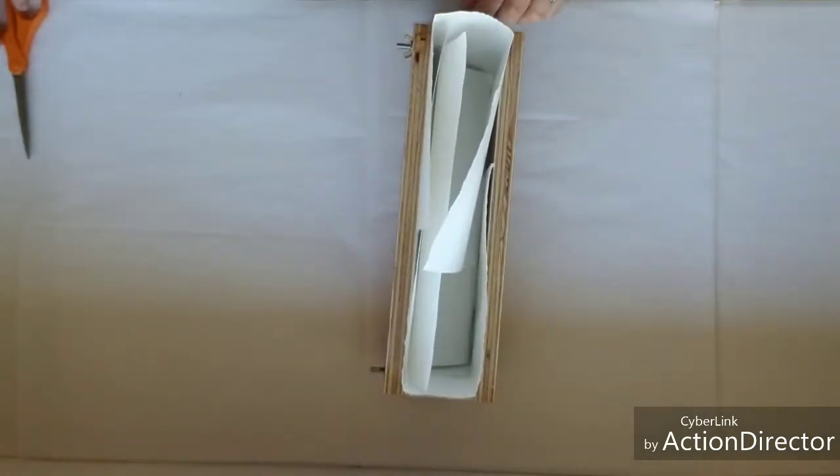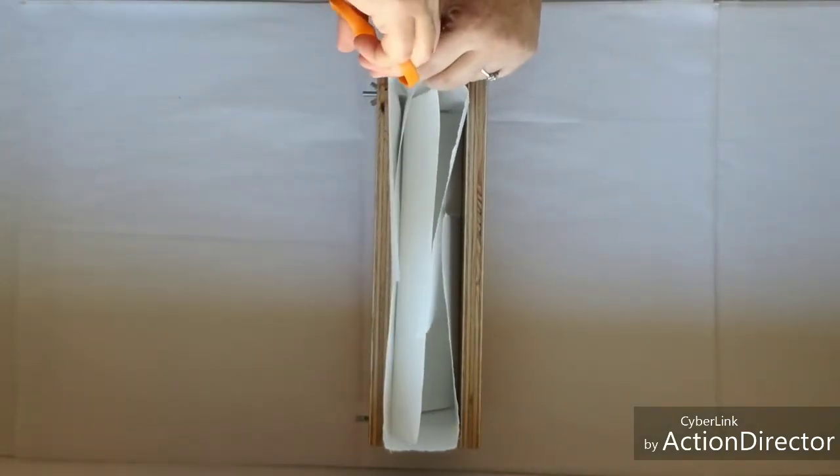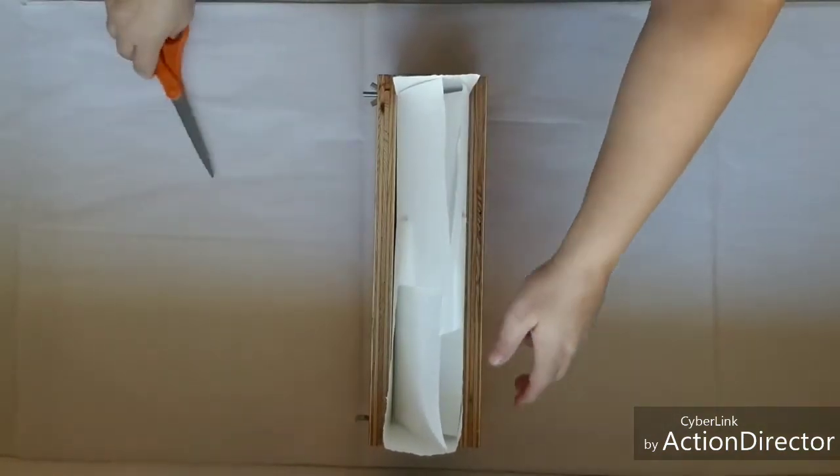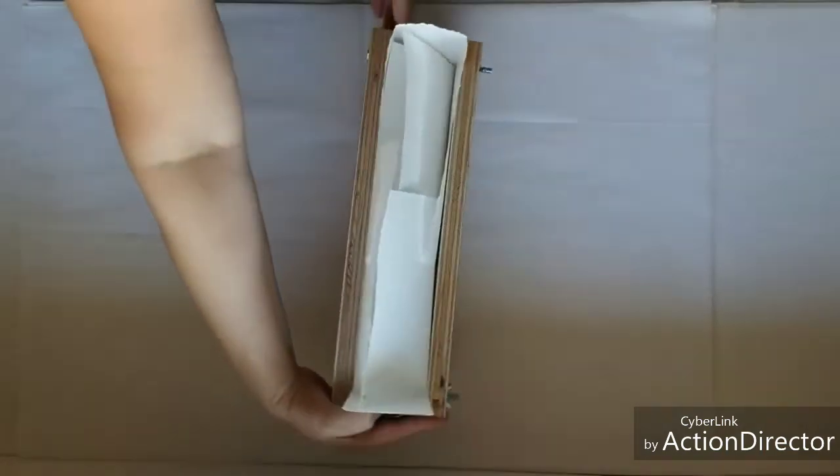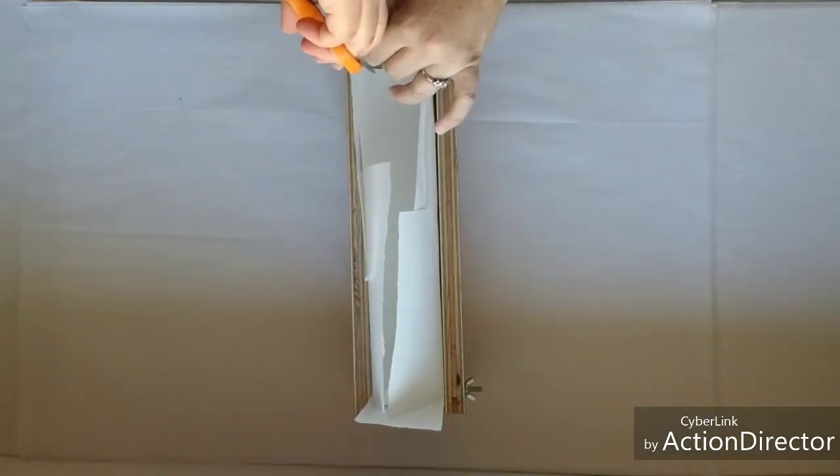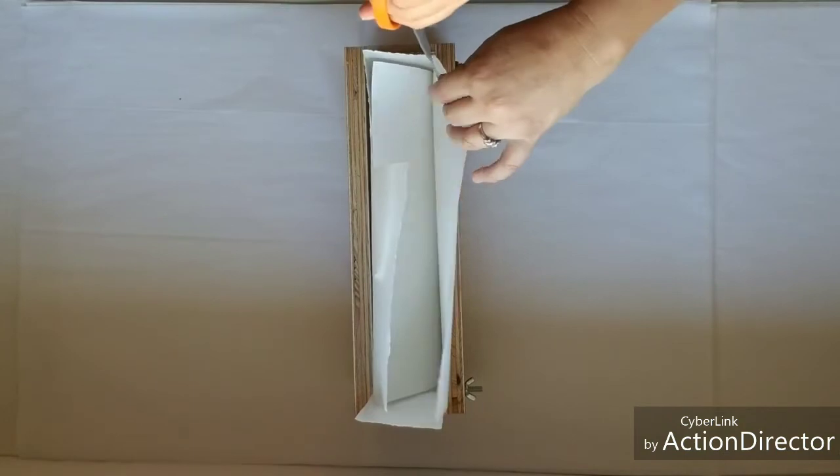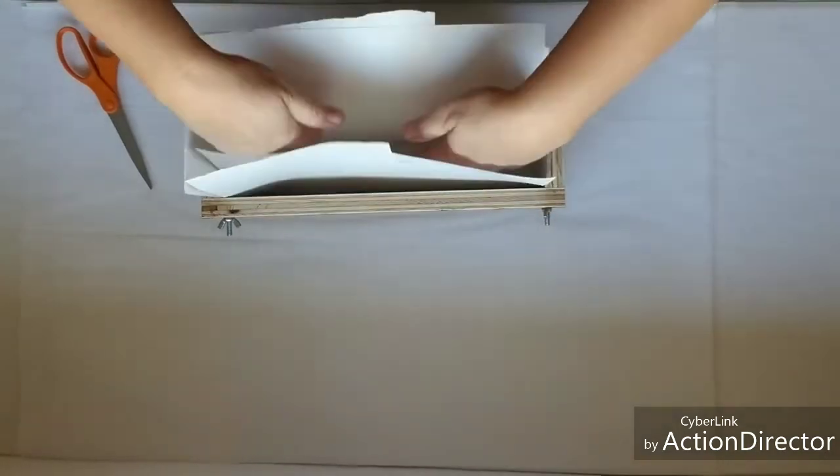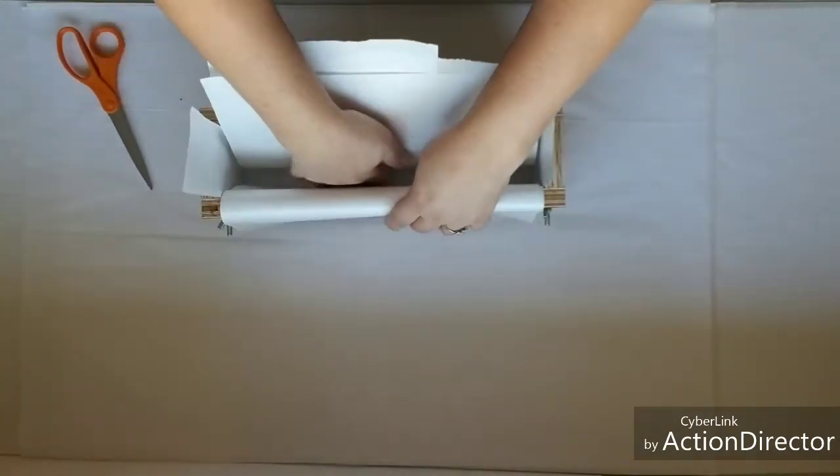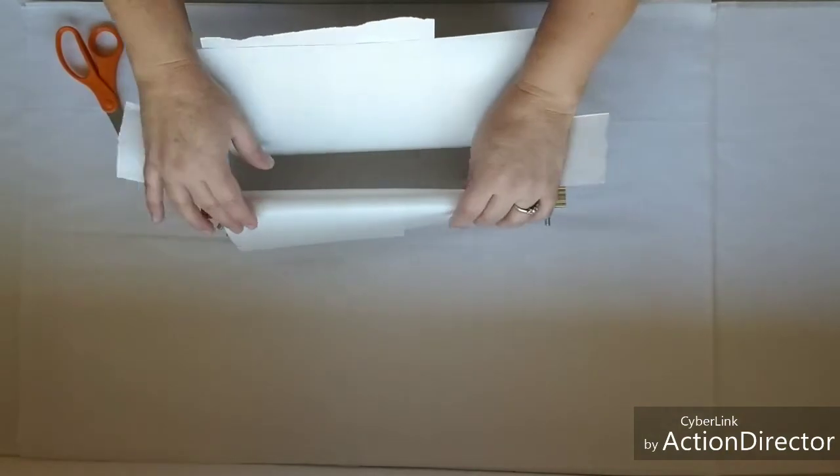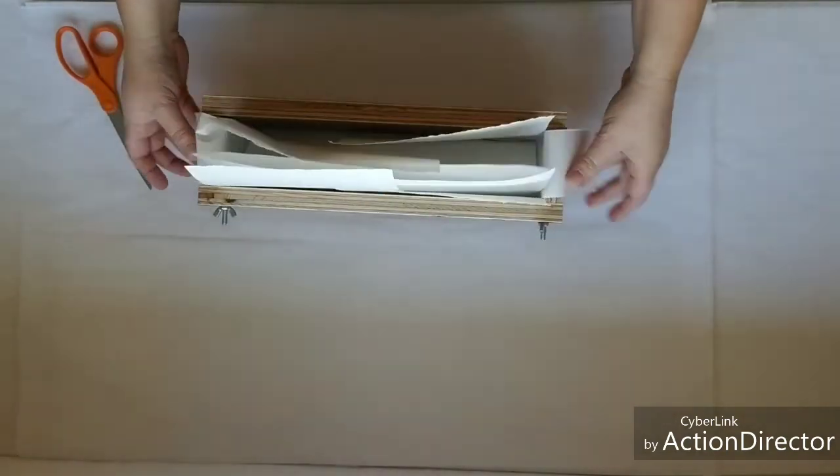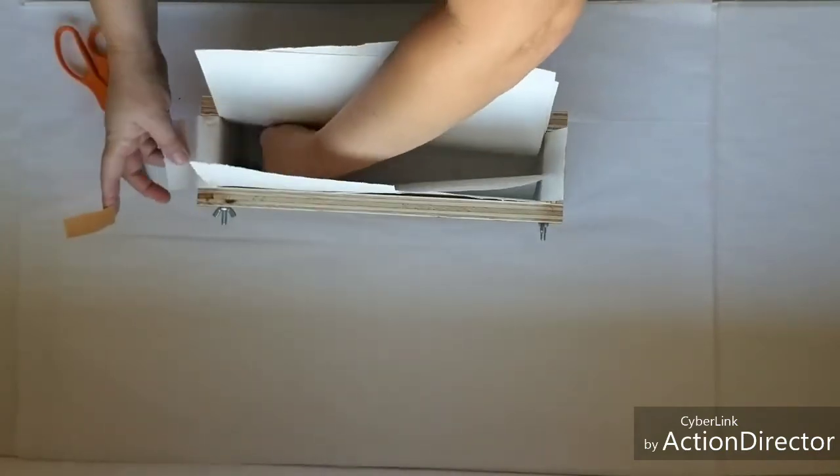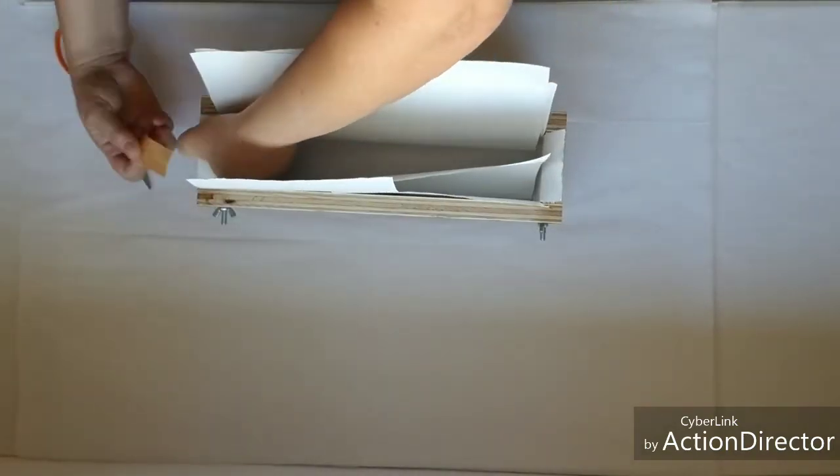You're going to cut these ends so you can fold them over and tape them. I just run my scissors down the sides here. Now you can see how easy it is to fold those down. So what I'm going to do is fold down these end pieces.